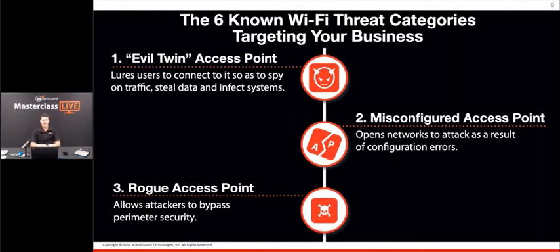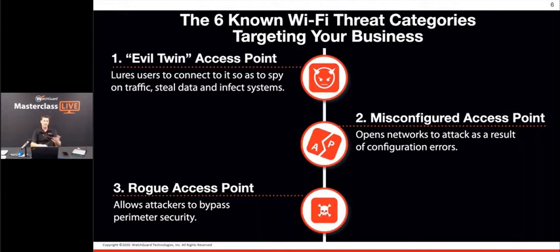WIPs targets six known Wi-Fi threat categories. The first is an evil twin access point — someone spins up an AP with a recognizable SSID like 'Qantas free Wi-Fi' to lure users, then performs a man-in-the-middle attack to intercept traffic and gather information.